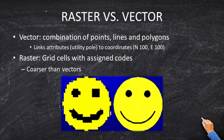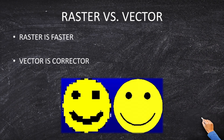On the other hand, we've got vector. Vector data is a series of points, lines, and polygons. On the right side of the smiley face, we have a line that makes up the smile, a polygon making up the two eyeballs, and a series of points in the middle. The outline and the yellow background of the smiley face are also polygons. If you remember anything in this video, remember this: raster is faster because it requires less processing power, while vector is corrector because you have greater precision, greater accuracy, and much less error in the data. If you want to go fast, go with raster. If you want accuracy, go with vector.